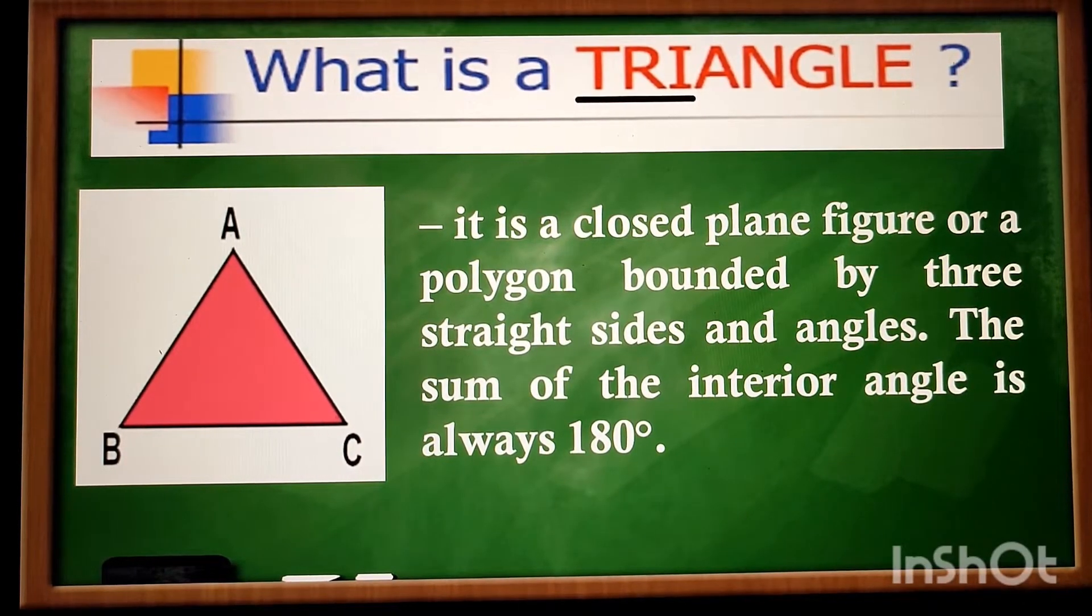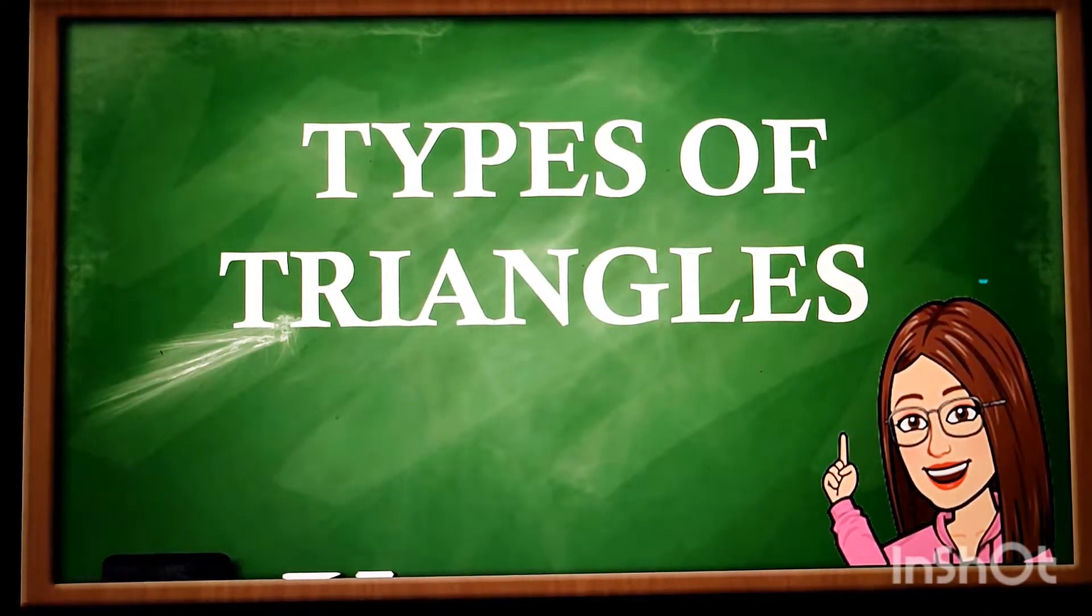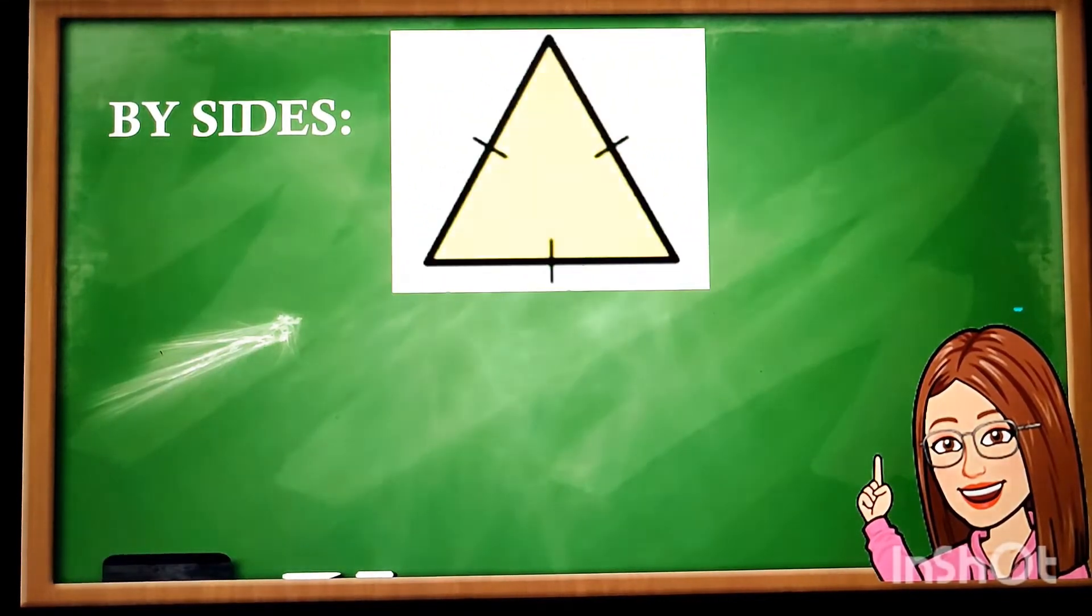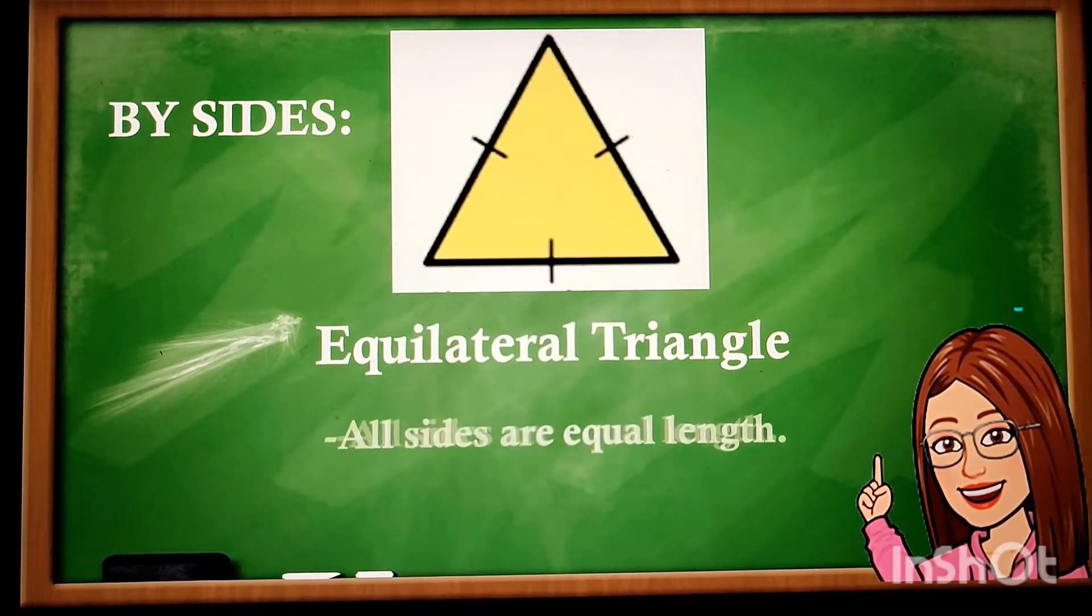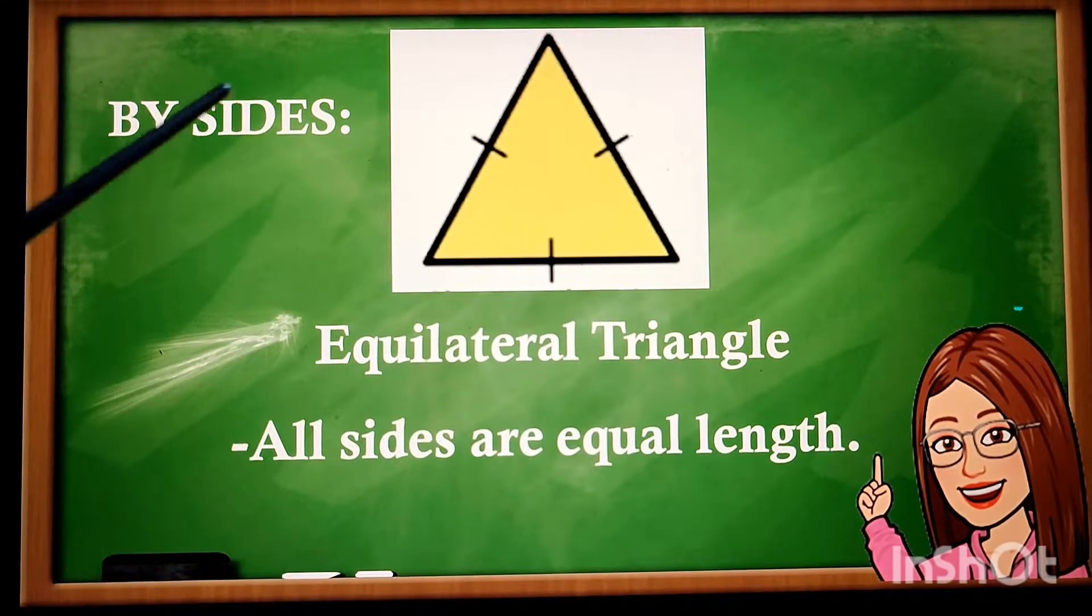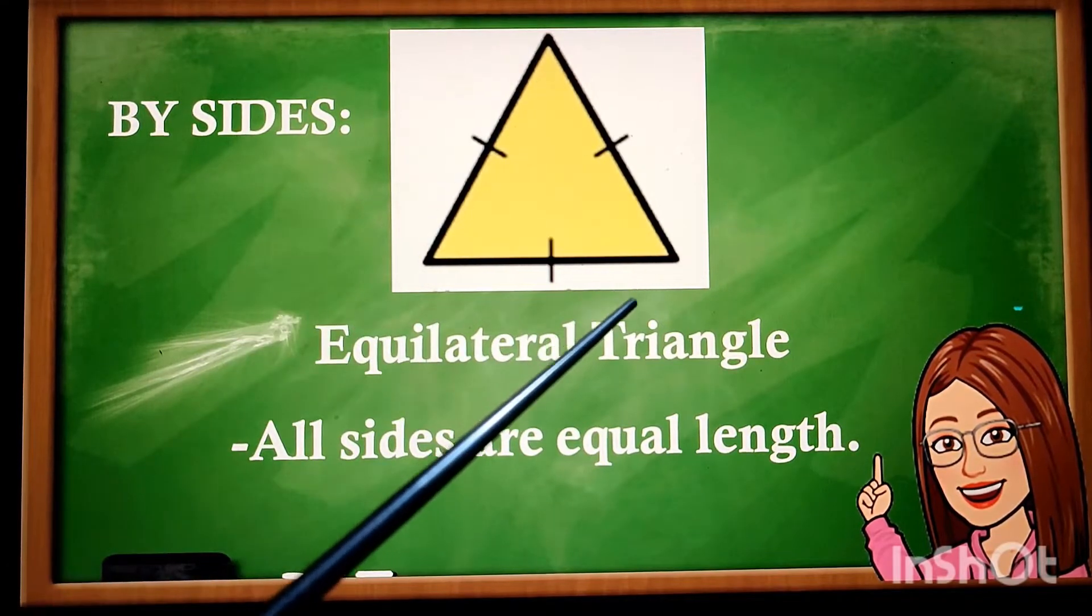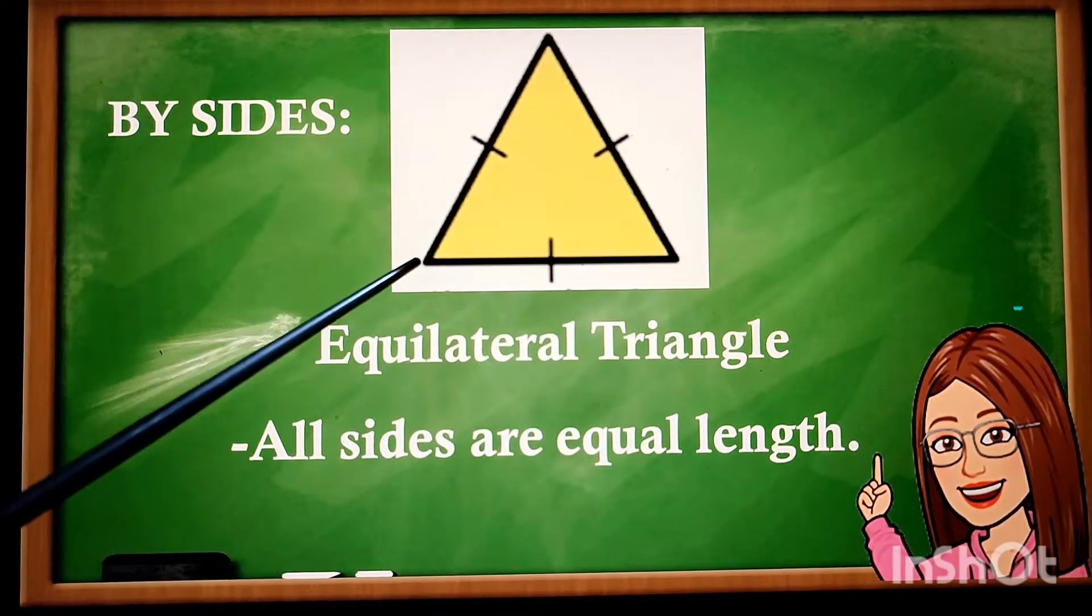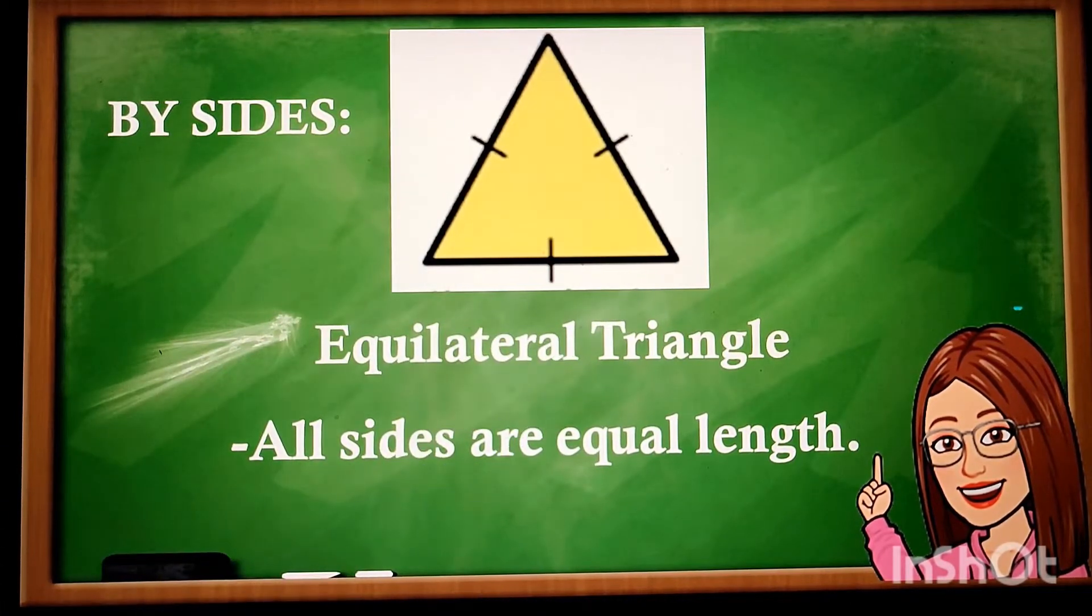Let us proceed to the types of triangles according to their sides. We have here equilateral triangle. All sides are equal length. 1, 2, 3 sides, they are the same length. Let us assume this is 5 cm long. All sides have 5 cm long.